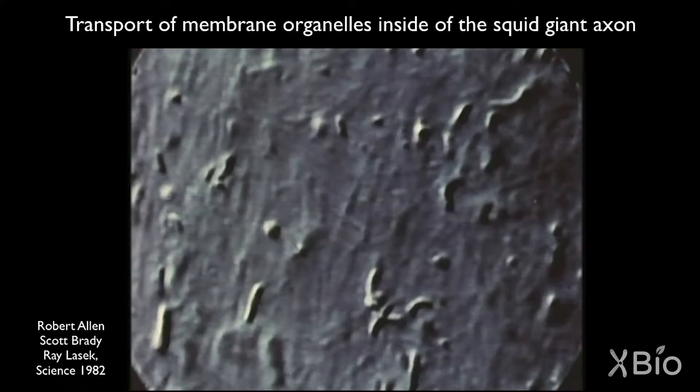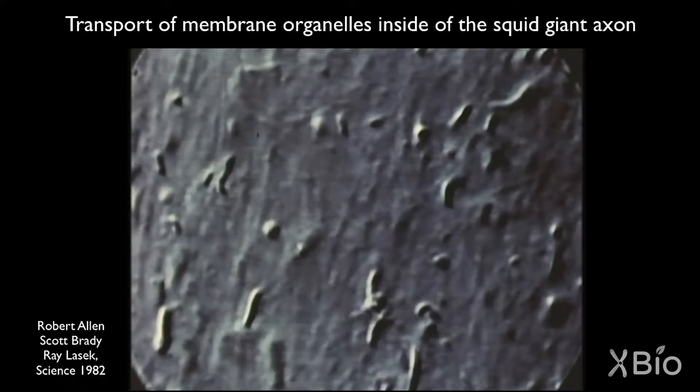Movement and motility is almost synonymous with life. When you peer inside the inner life of a cell with a microscope, you can see that it's churning with moving objects. Many of these moving objects are small cargo containers called membrane organelles or vesicles.